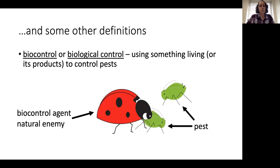A few more definitions. You may hear me use the terms biocontrol or biological control during this presentation. This just means using something living, or something that a living thing produces, to control pests. Lady beetles and aphids are a great example — the aphids are a pest we don't want on our plants, and the lady beetle is going to eat them and control the pest. The lady beetle we might call a biocontrol agent or a natural enemy of the pest.